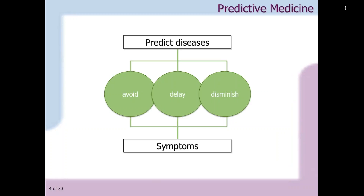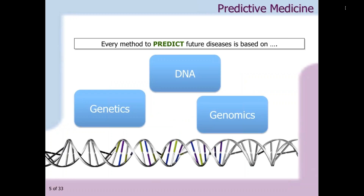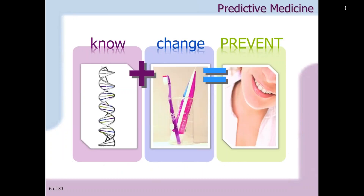Predictive genetics is the branch of medicine focused on determining the probability of the occurrence of certain diseases and providing adequate preventive measures with the objective to avoid the disease. When the disease cannot be avoided, at least delay its onset or diminish its symptoms. Every method to predict genetic diseases is based on genetics, genomics, and DNA studies. We can know our genetic background to change our habits in order to prevent diseases. The progression of knowing, changing, and preventing is the basis of predictive medicine.